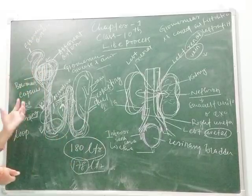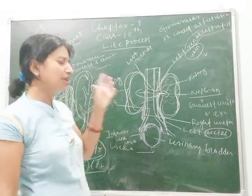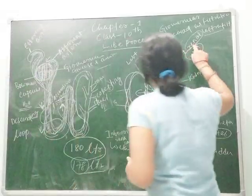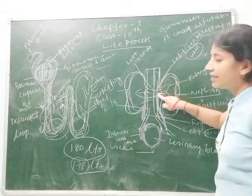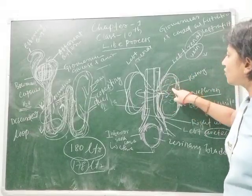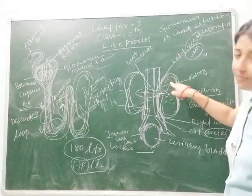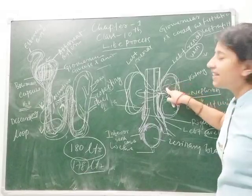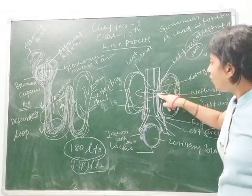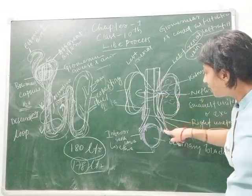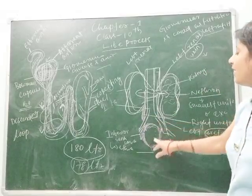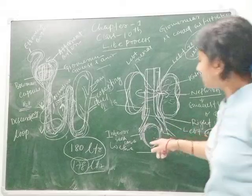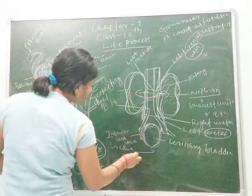So to summarize the kidney process: the renal vein brings unfiltered blood to the kidney; inside the kidney, millions of nephrons filter the blood; after filtration, the filtrate gets reabsorbed; and the remaining unfiltered substance passes through the ureter to the urinary bladder where it is stored, then released through the urethra when pressure builds.